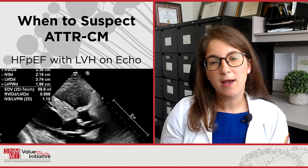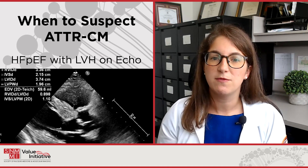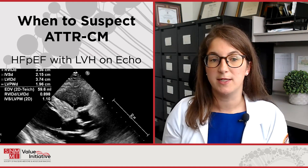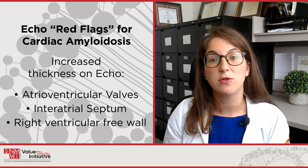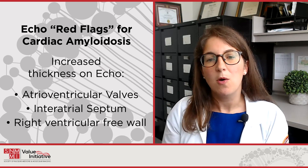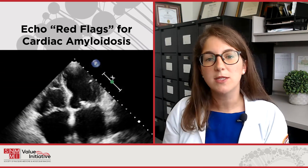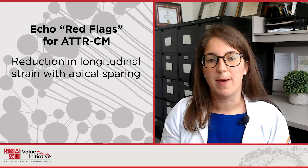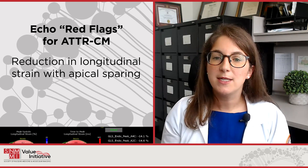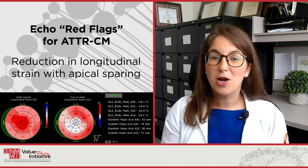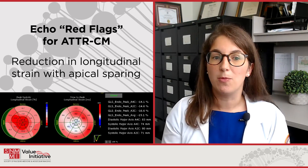As an echocardiographer, when I come across an echo that looks like this image, my suspicion is raised for ATTR amyloidosis. Specific findings on this echo include increased LV wall thickness as well as a small pericardial effusion. In addition, patients with cardiac amyloidosis may have thickening of the atrioventricular valves, of the inner atrial septum, or of the right ventricular free wall, as cardiac amyloidosis can also affect the right ventricle. In our echo lab, we use strain imaging to further help identify patients who may have amyloid. Strain imaging allows us to look at deformation of the myocardium. Classically, patients with cardiac amyloidosis will have preservation of the apex — as seen in this image, it's classically described as a cherry on top. This dark red area on the strain imaging suggests apical preservation of strain.